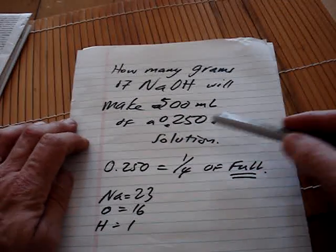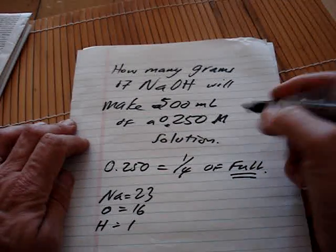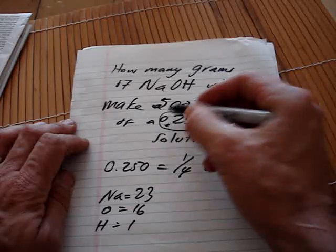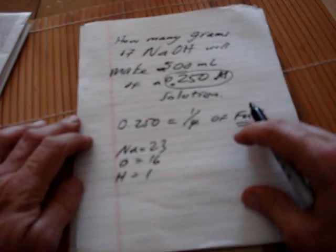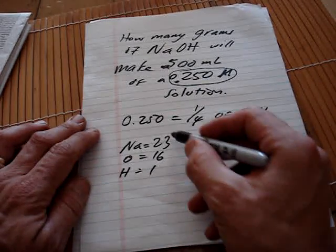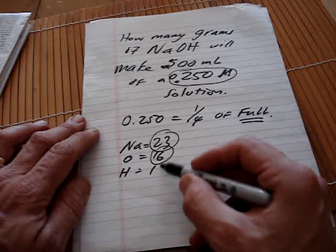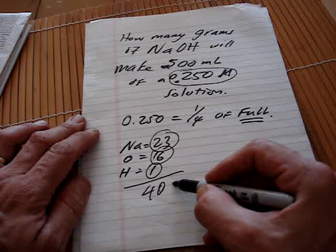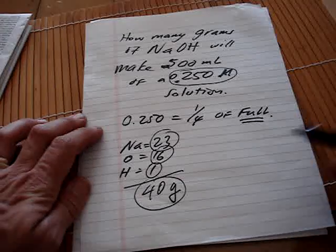Well the first thing we look at is 0.25. This is just a bunch of fractions. That's all they want you to do. We know that sodium is 23, oxygen 16, so we add them together we have 40 grams.